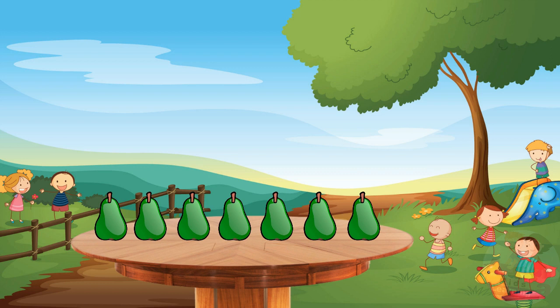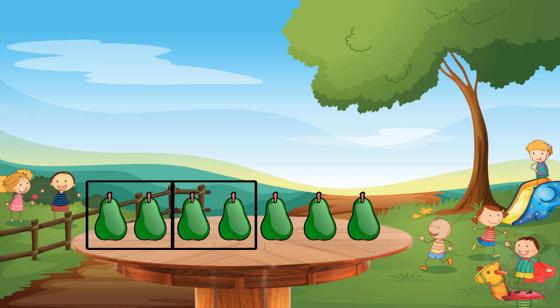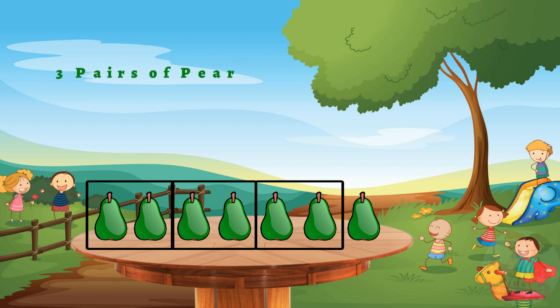We take the example of pear now. First pair. Second pair. Third pair. Three pairs of pear with one pear left. So it's odd as well.